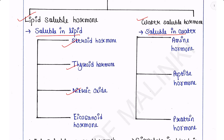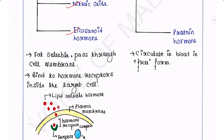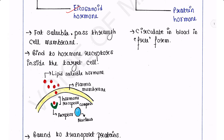Lipid-soluble hormones also include nitric oxide and eicosanoid hormones. They can pass through the cell membrane as they are fat-soluble, so they can pass through the plasma membrane of a cell and then bind to hormone receptors inside the target cell. Lipid-soluble hormones are bound to transport proteins, which make them temporarily water-soluble, thus increasing their solubility in blood.